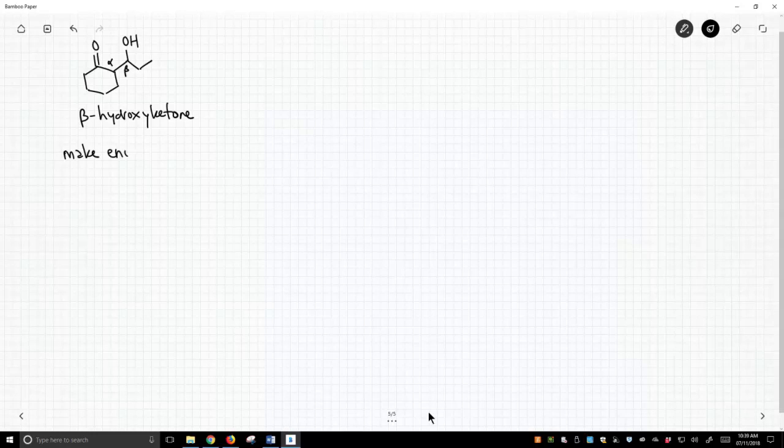Moving forward, we're going to make an enolate. Then we're going to use that enolate to attack a carbonyl, typically an aldehyde. Then last step, we protonate the tetrahedral intermediate.